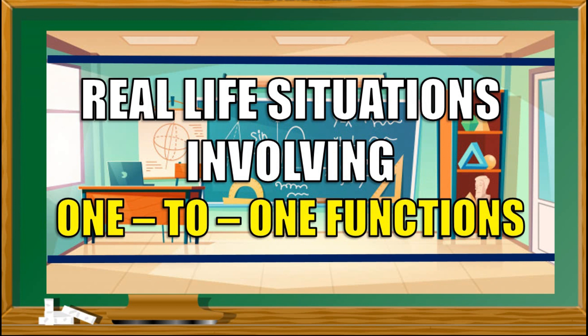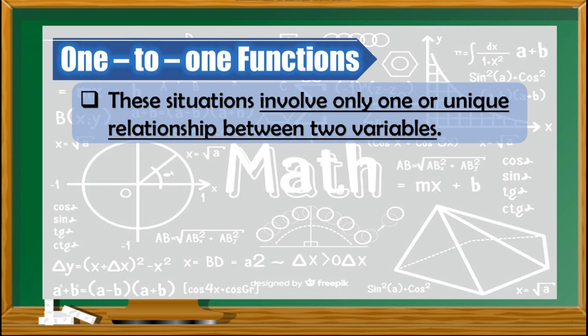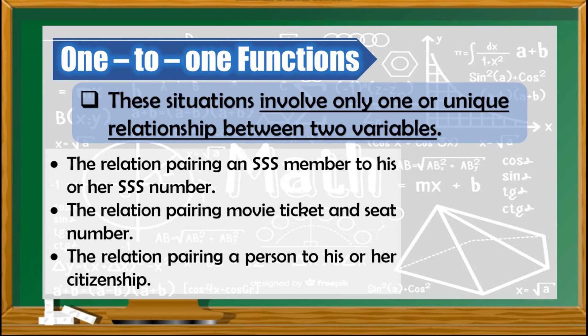Let us start with real-life situations involving one-to-one functions. There are several situations that can be represented by one-to-one, and these situations involve only one unique relationship between two variables. First, the relation pairing an SSS member to his or her SSS number. Each SSS member can only have one unique SSS number, therefore this example is one-to-one.